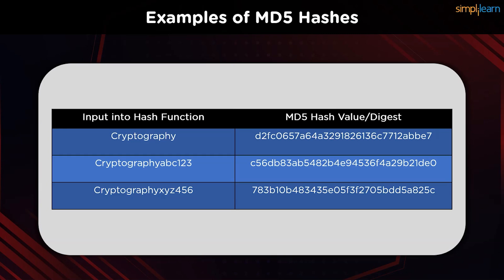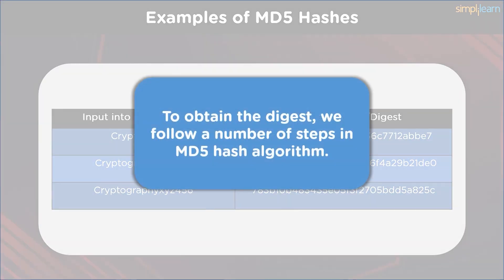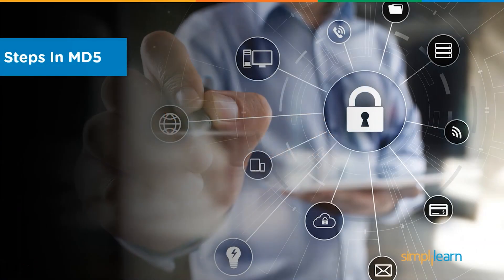Even a slight change in the plain text should trigger a drastic difference in the two digests. This goes a long way in preventing hash collisions, which take place when two different plain texts have the same digest. To achieve this level of intricacy, there are a number of steps to be followed before we receive the digest. Let us take a look at the detailed procedure as to how the MD5 hash algorithm works.